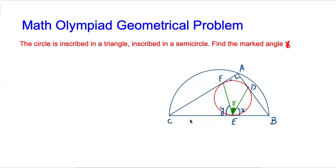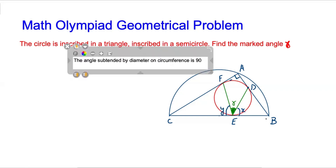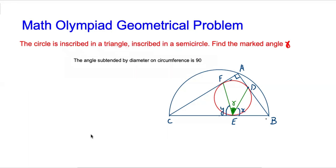Now, angle CAB is 90 degrees because the angle subtended by the diameter on the circumference is 90 degrees. We use this property of the circle: angle CAB equals 90 degrees.